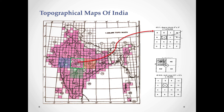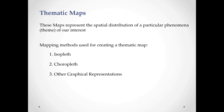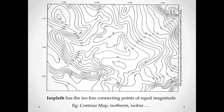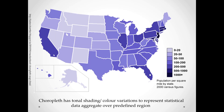These are topographical maps of India. Thematic maps represent the spatial distribution of a particular phenomenon of interest. Mapping methods used for creating a thematic map include isopleth, choropleth, and other graphical representations. Isopleth uses isolines connecting points of equal magnitude — for example, contour maps, isotherms, etc. Choropleth uses tonal shading or color variation to represent statistical data aggregated over predefined regions.